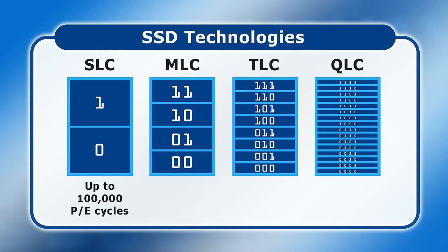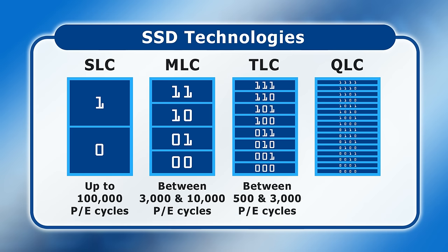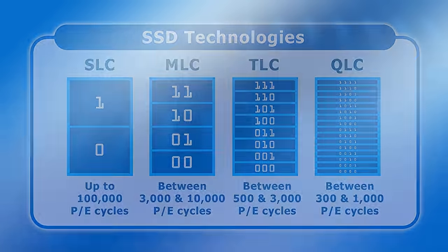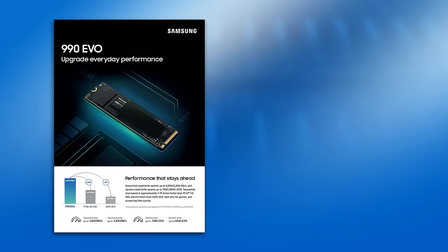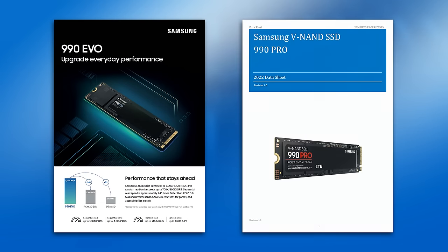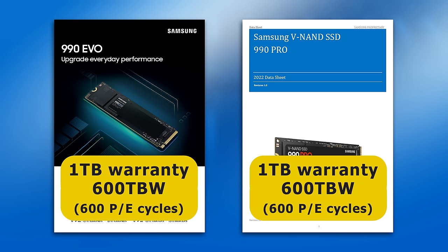As a guide, today SLC drives can sustain about 100,000 PE cycles, MLC between about 3,000 and 10,000, TLC between 500 and 3,000, and QLC between 300 and 1,000. Manufacturer guarantees tend to reflect the lower end of this range. For example, Samsung's 1TB 990 EVO and 990 Pro SSDs have a warranty of 600TB written, which equates to 600 PE cycles for these TLC drives.